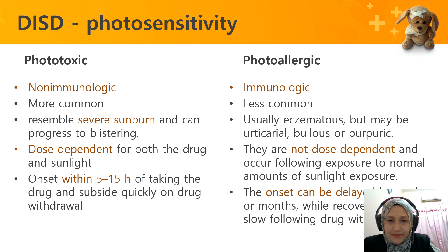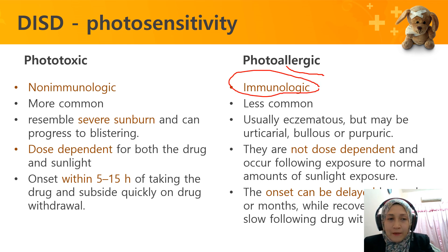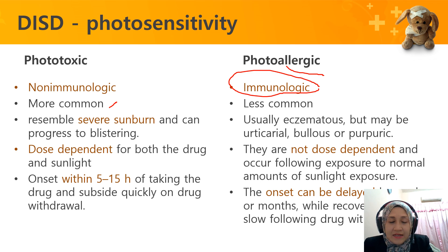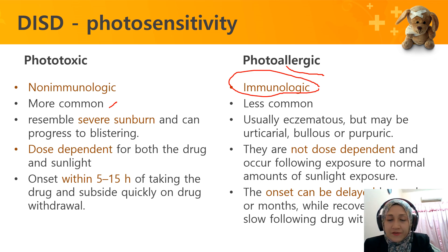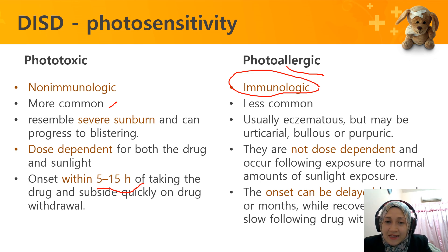Photosensitivity can be divided into phototoxic or photoallergic. Photoallergic is related to an immunologic reaction, whereas phototoxic is not. Phototoxic is the most common type and is dose-dependent — the more drug taken, the higher the risk. It resembles severe sunburn, can progress to blistering, and appears within five to fifteen hours of taking the drug, subsiding quickly.